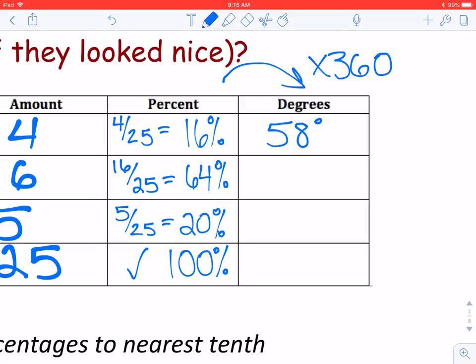That's why I'm just going to round it to the nearest whole number. When I do the next one, 64% of a circle, 360 degrees, comes out to 230.4, which when rounded is 230.